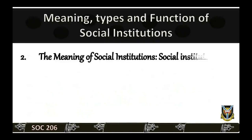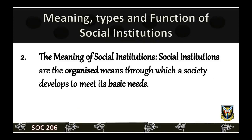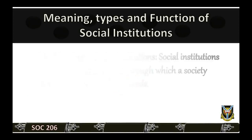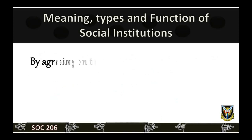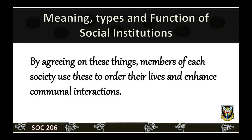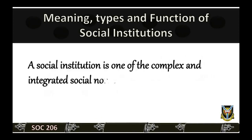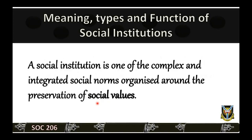The meaning of social institutions. Social institutions are the organized means through which a society develops to meet its basic needs. They are organized ways of doing things, generally agreed upon by members of a society. By agreeing on these things, members of each society use these to order their lives and enhance communal interactions. A social institution is one of the complex and integrated social norms organized around the preservation of social values. It is a system of organization that works to meet basic social needs and connects individual members of society to the larger culture.